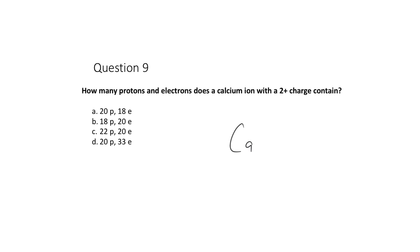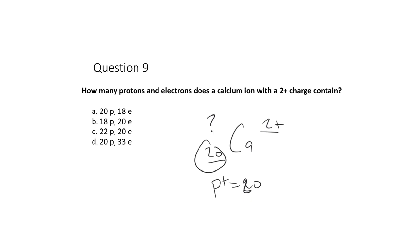Question nine asks about the proton and electron count of calcium with a 2+ charge. Calcium's atomic number is 20, so it has 20 protons. Electrons orbit outside the nucleus and can be gained or lost. Calcium 2+ lost two electrons, leaving 18 electrons. In a neutral atom it would have had 20, but losing two gives a net charge of +2.